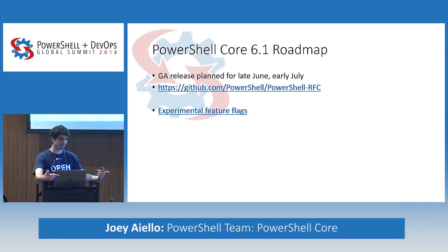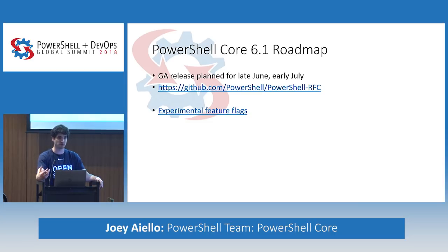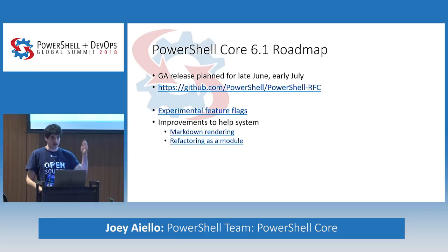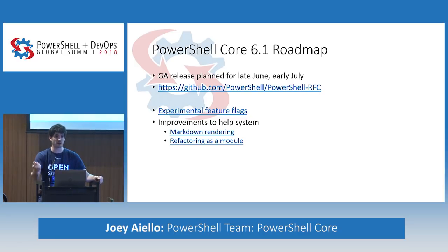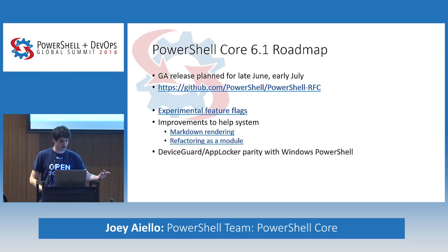The experimental feature flag infrastructure could eventually allow you to opt into deprecation or removal of features — similar to Python's import futures concept. We also demoed improvements to the help system: native markdown rendering with color highlighting, inline parameter descriptions. We're refactoring the help system as a module, thinning down PowerShell to a core engine where interactive pieces can be layered on top — our first step in moving things out of system.management.automation into their own modules.